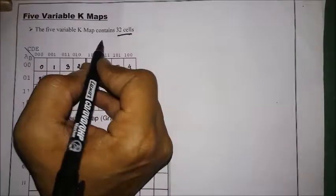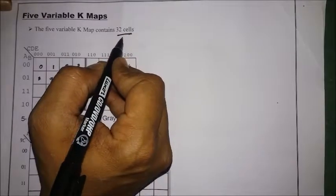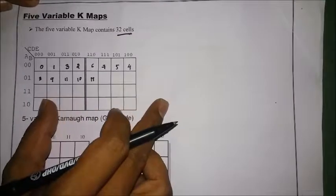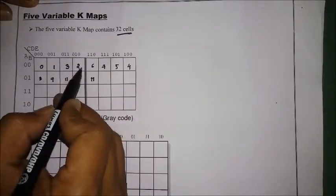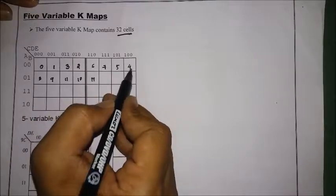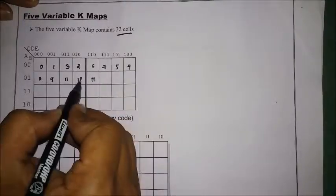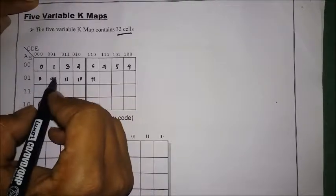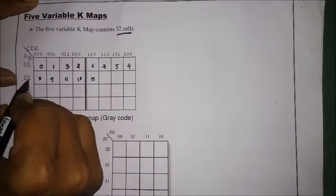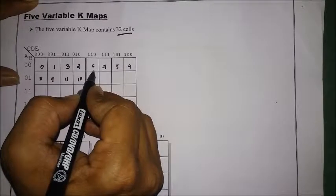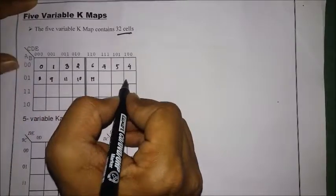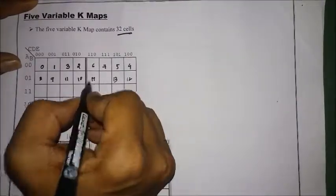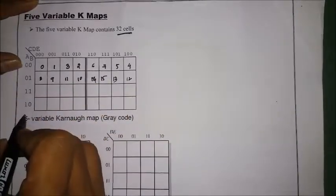In a five-variable K-map, there are a total of 32 cells. We need to represent these 32 cells using decimal numbers: 0, 1, 2, 3, 4, 5, 6, 7, 8, 9, 10, 11. After 11, 12 is binary 01100, then 13, 14, 15.